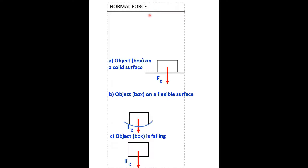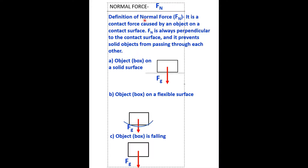Normal force, or F-sub-N — notice this N is uppercase. Definition of normal force: it is a contact force caused by an object on a contact surface. F-N is always perpendicular to the contact surface, and it prevents solid objects from passing through each other.